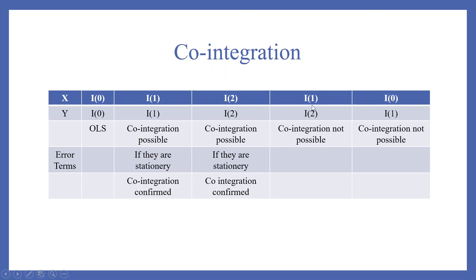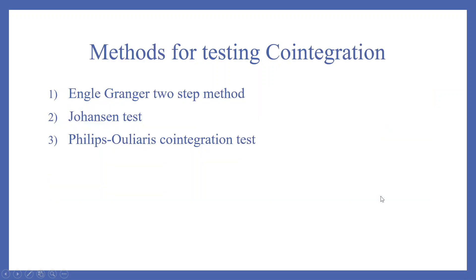Now, if X is integrated of level 1 and Y is integrated of level 2, co-integration is not possible. Similarly, if X is integrated of level 0 and Y is integrated of level 1, co-integration is not possible.